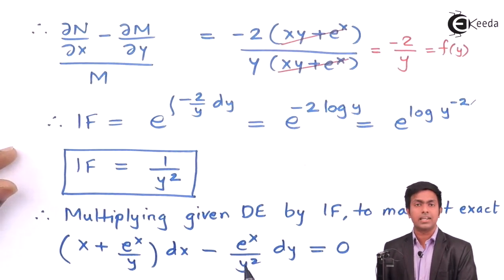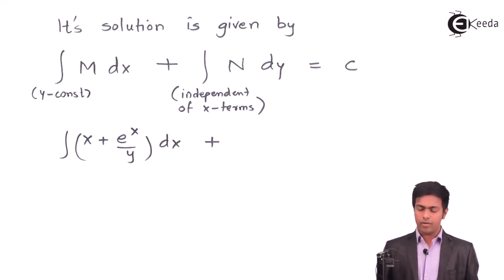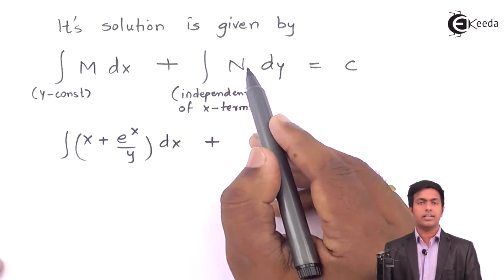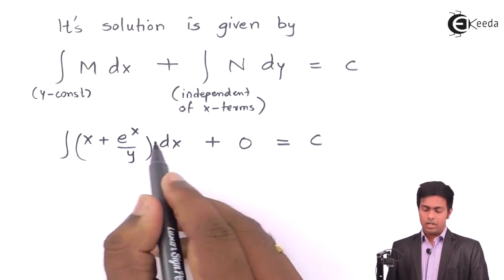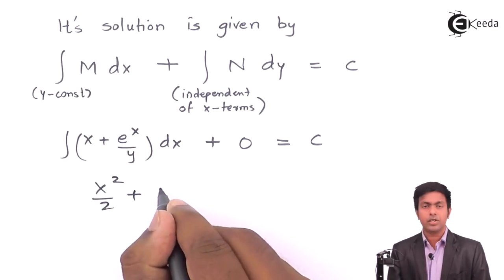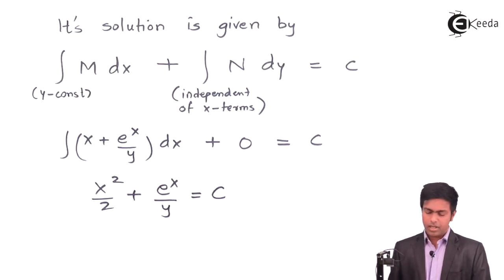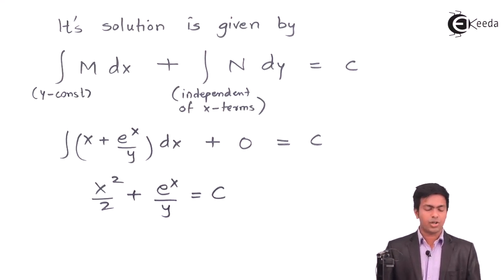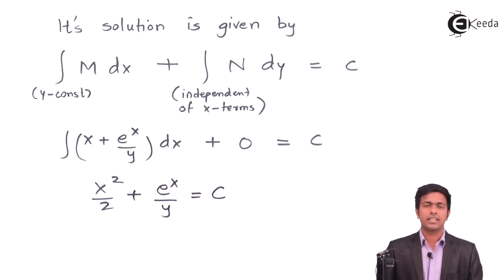For N, the only term contains x, so there is no term independent of x; hence that part is 0. Integrating x with respect to x gives x²/2, and integrating e^x/y with respect to x gives e^x/y. Therefore the solution is x²/2 + e^x/y = c, and this is the solution of the given differential equation obtained by reducing it to exact form.